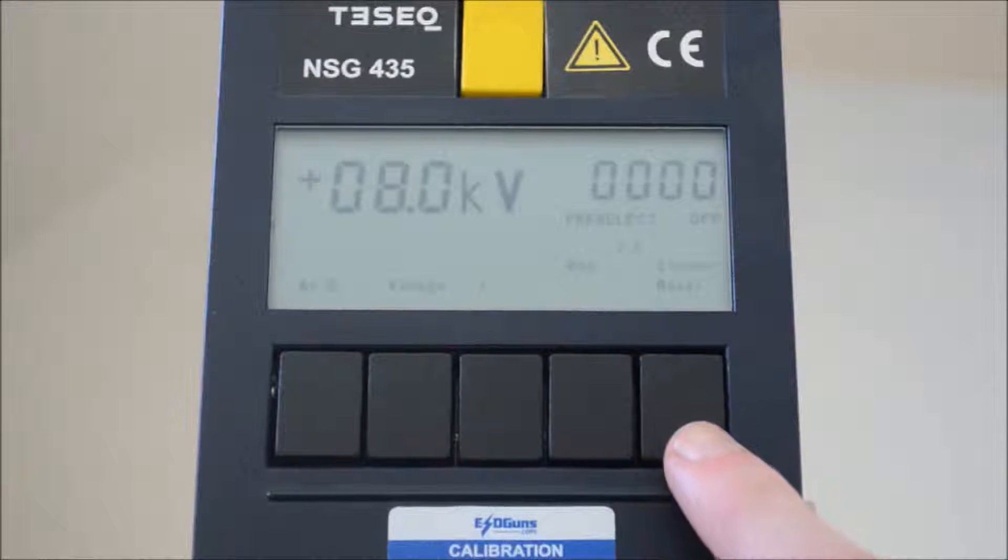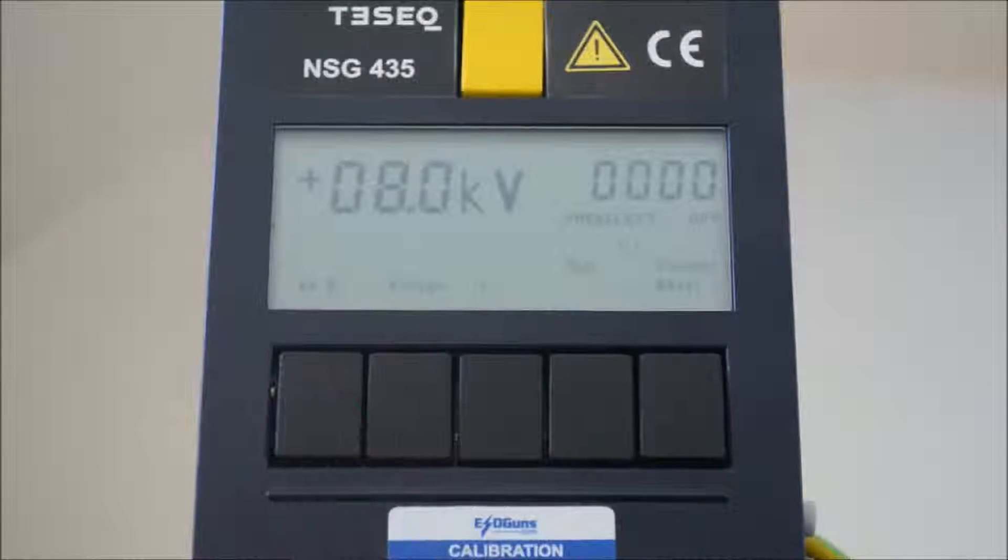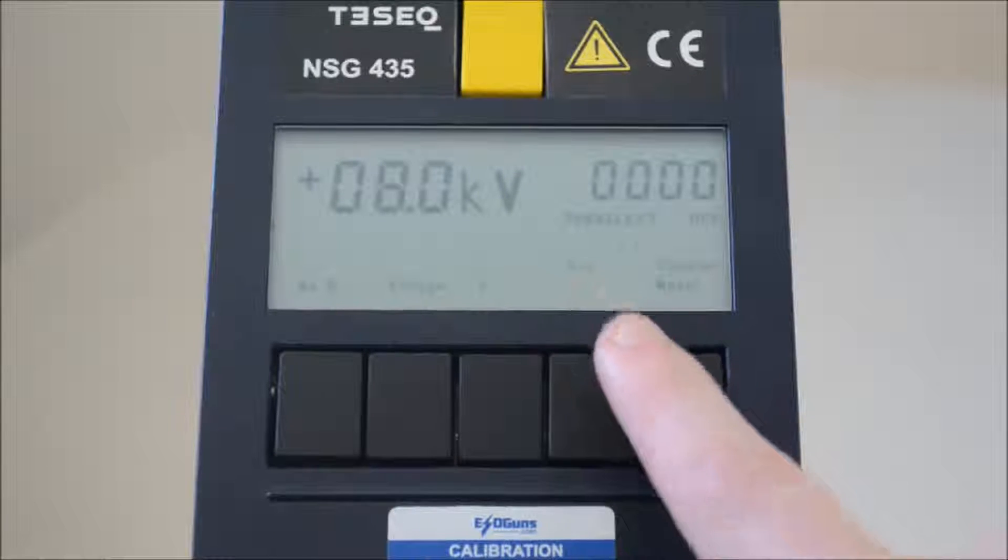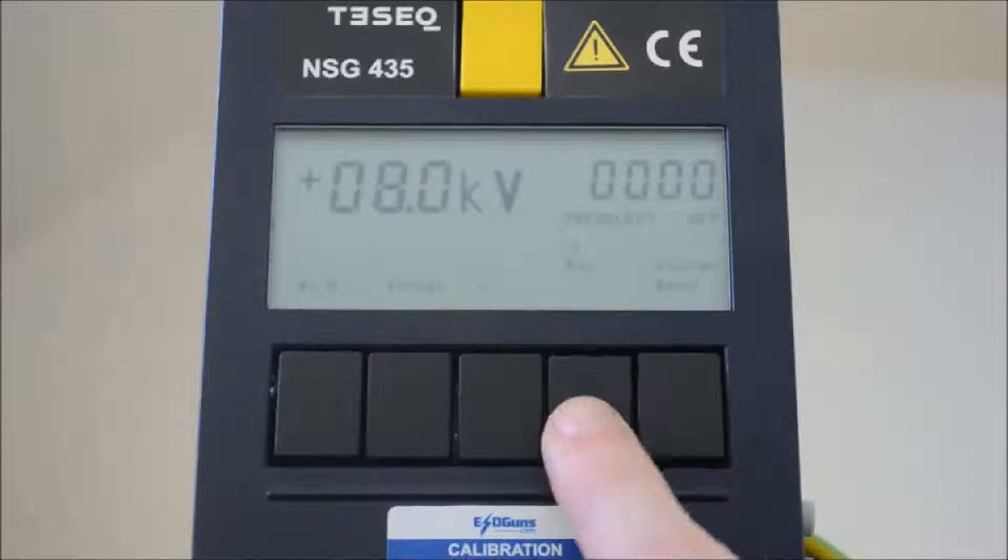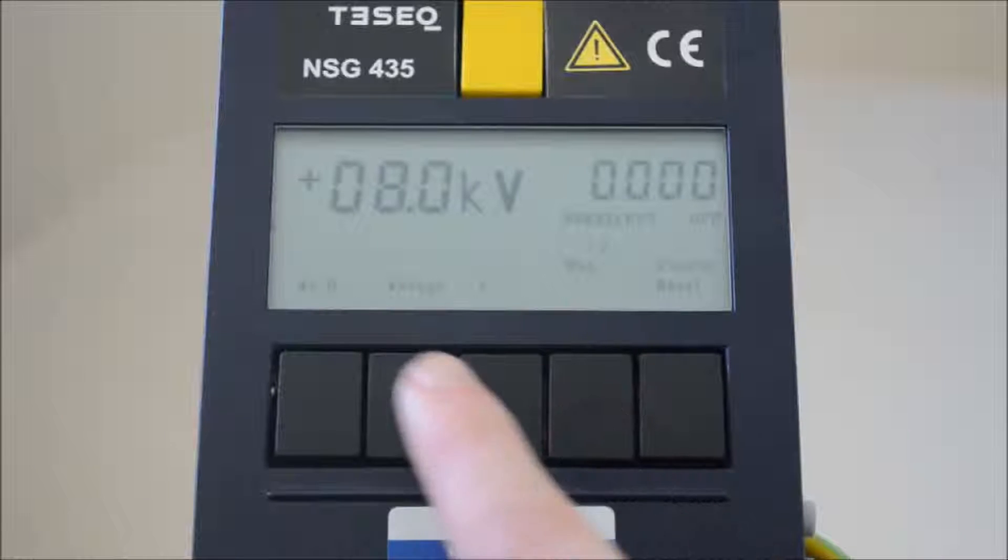The unit is capable of 25 pulses per second but only in air discharge mode. F4 allows us to update the repetition cycle to 10 Hz. Now we can enter contact mode.